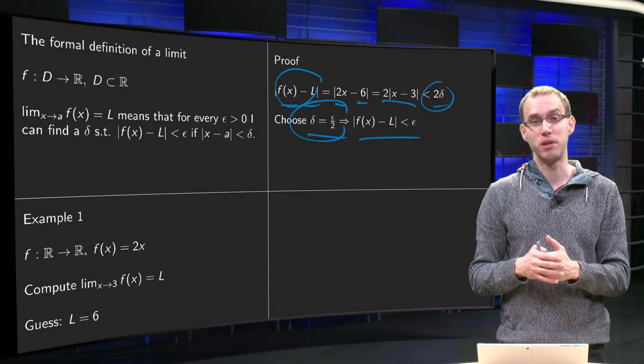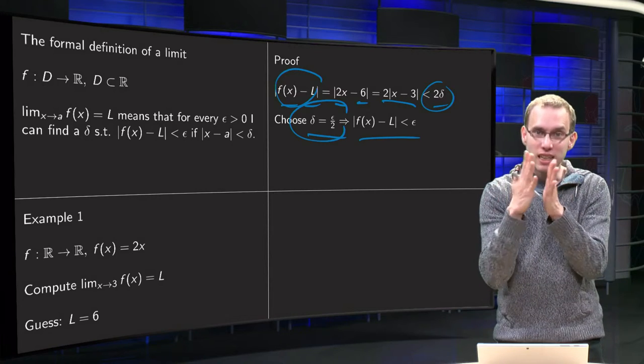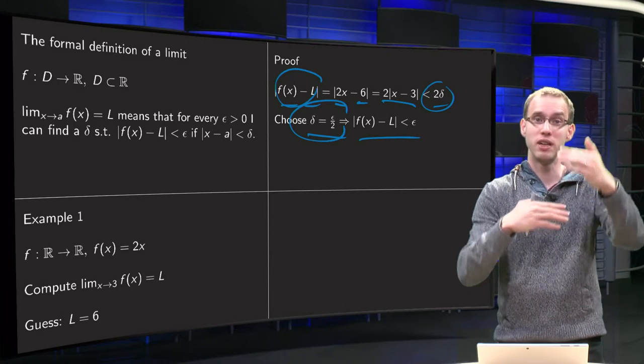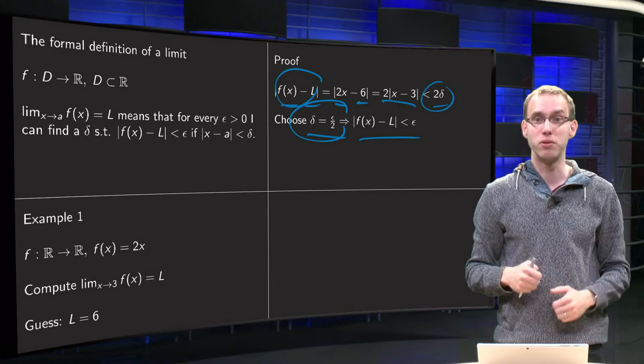For every epsilon someone gives you, you will have to be able to give a delta such that if the x's are close enough to your limit point, then the function values are close enough to the limit value.